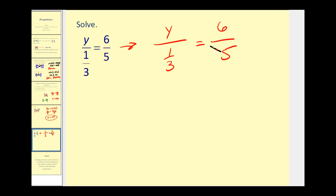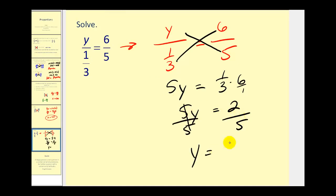Now we'll go ahead and cross multiply. So we'd have 5 times y, or 5y, must equal 1/3 times 6. Well, 1/3 times 6 would be 6/3 or 2, so we have 5y equals 2. So dividing both sides by 5, we have y equals 2/5.